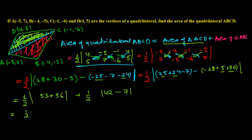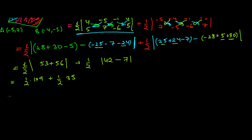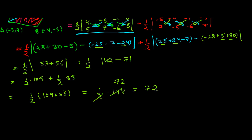Now the final arithmetic: for triangle ACD, one-half of (53 + 56) = one-half of 109. For triangle ABC, one-half of (42 - 7) = one-half of 35. Total area = one-half × (109 + 35) = one-half × 144 = 72.